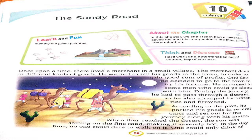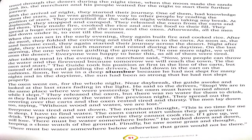The sun was shining on the fine sand, making it severely hot in the daytime — itni garmi thi ki vahaan koi bhi himmat nahi kar sakta tha uske upar chalne ke liye. One could only think of crossing the desert during the nighttime, when the moon made the sands cool — jab moon aata toh sands thanda ho jaata — tab woh chalna shuru karte the, taaki unki journey poori karne mein koi problem na aaye.